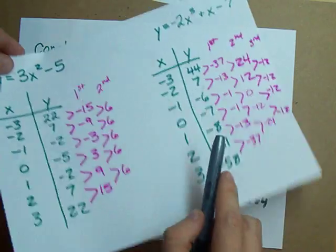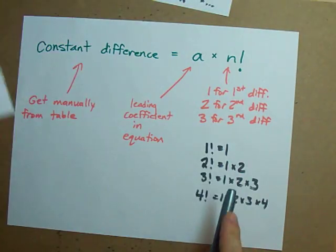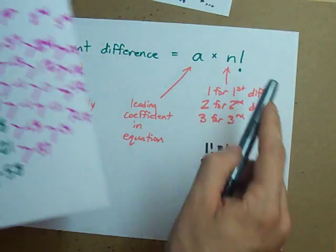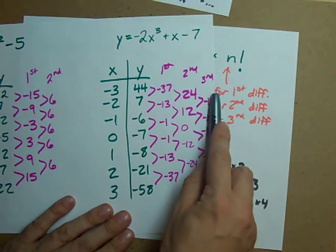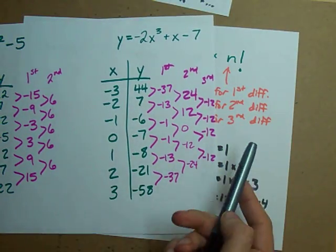And my leading coefficient negative 2 times 6 gave me my third differences. It's pretty cool.